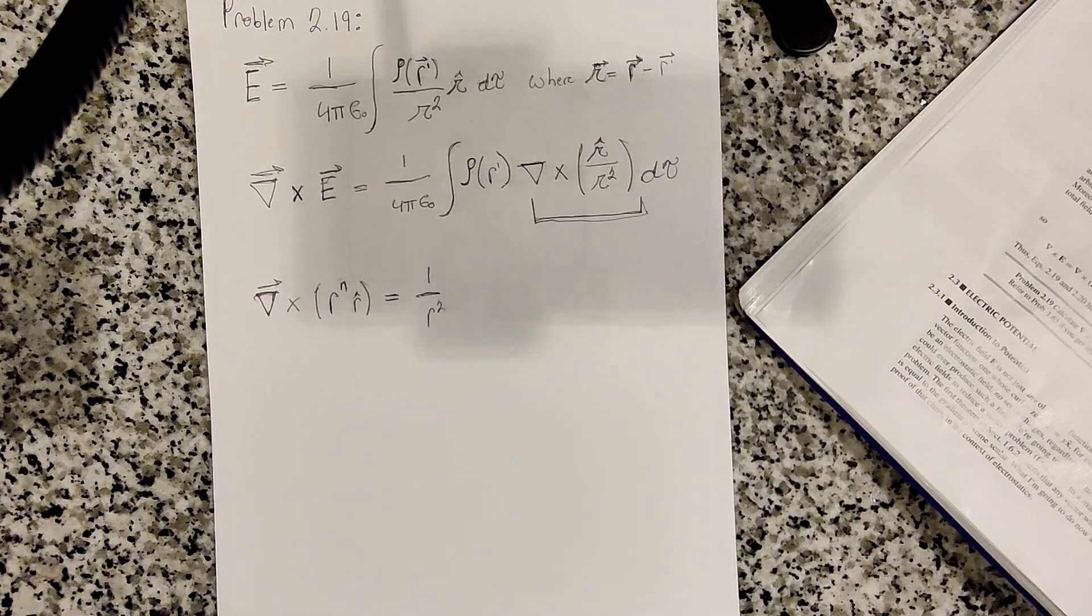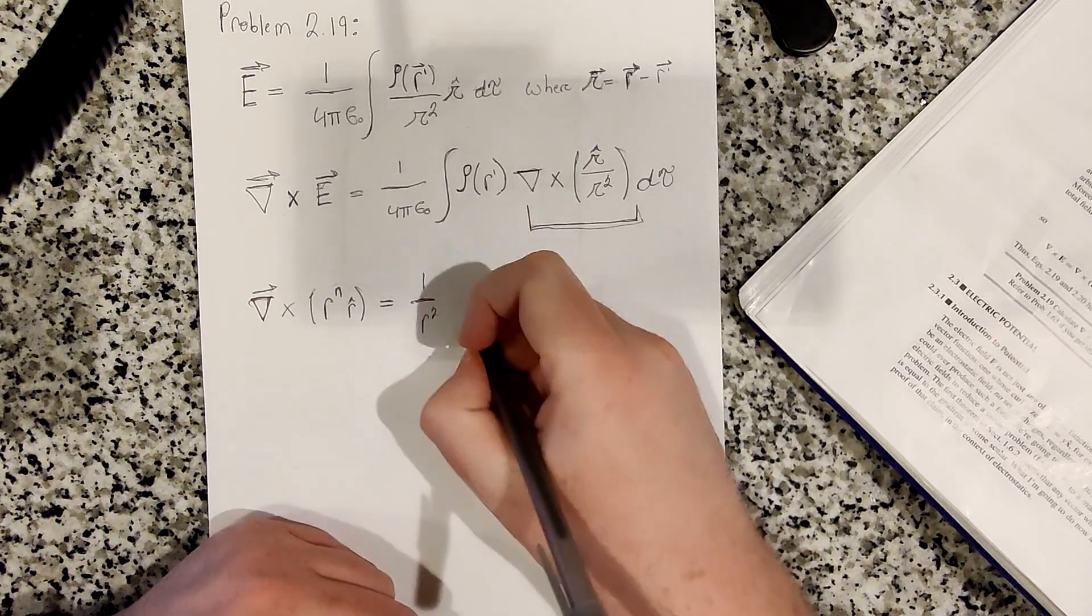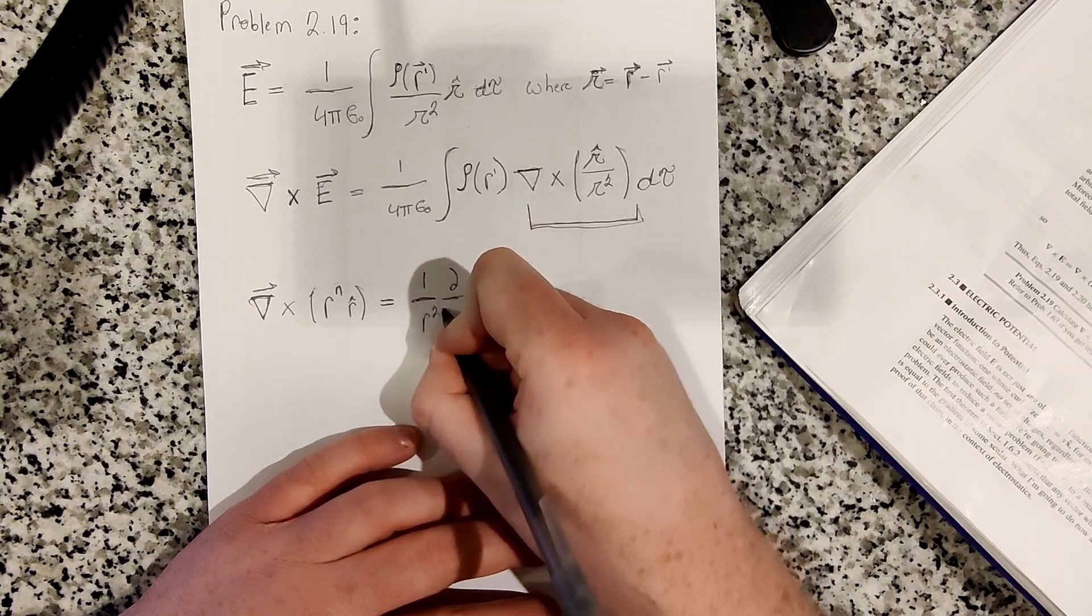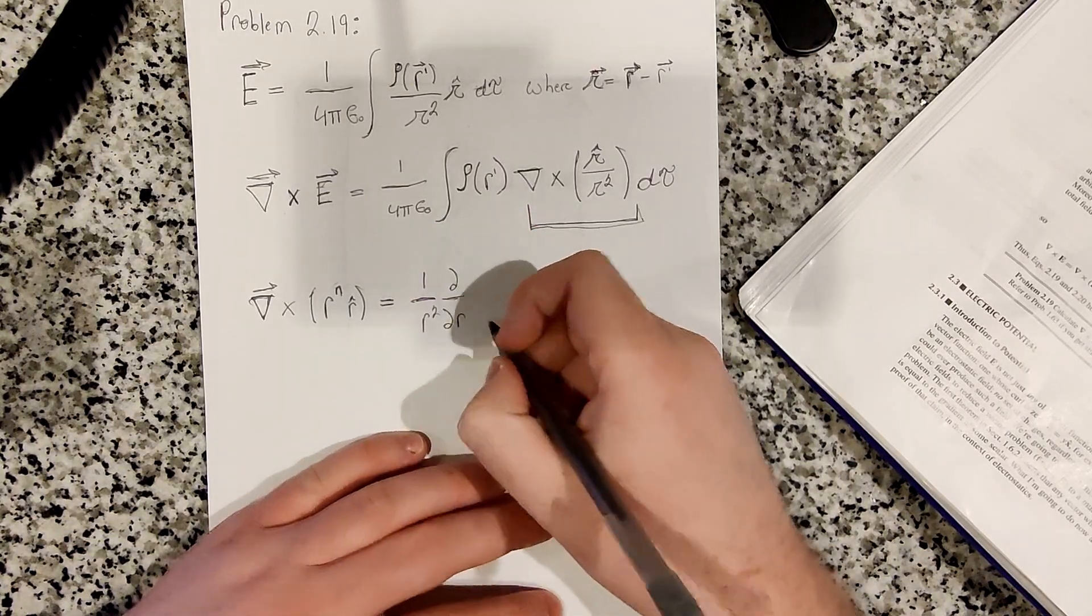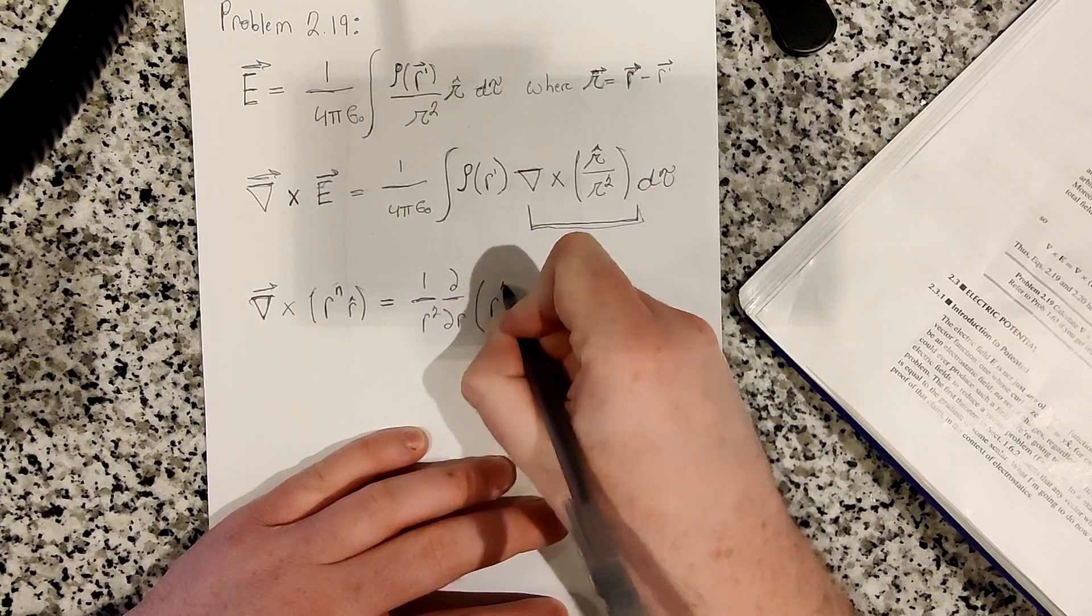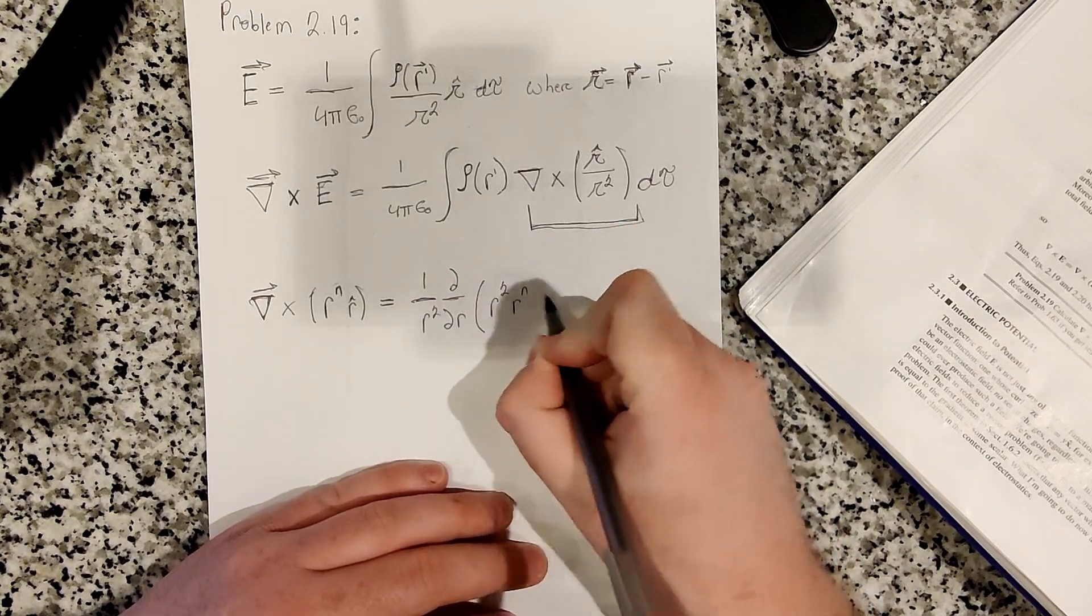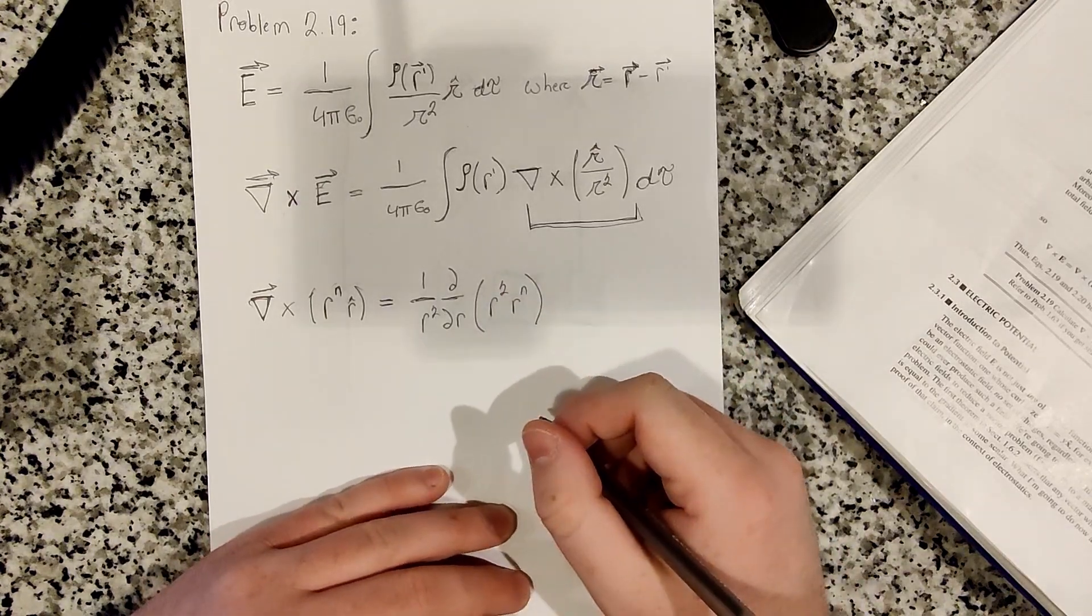You can find this in the front cover of this book, if you forget what the equation of the curl is in spherical coordinates. So it's 1 over r squared, the partial derivative with respect to r on r squared times the r component, which is r to the n.